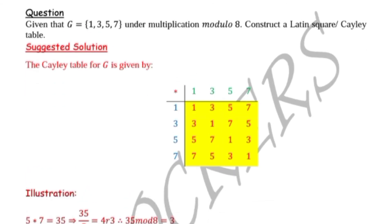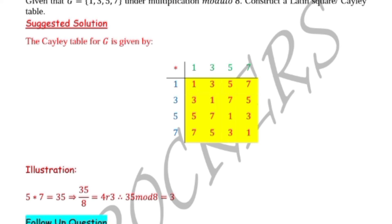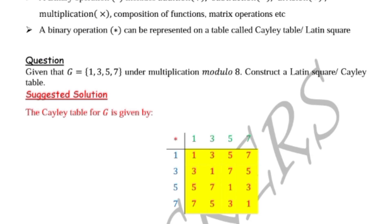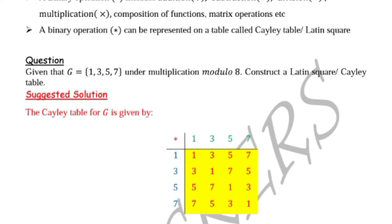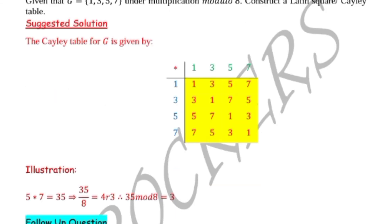The remainder 7 is what we write in the table. Now let's check 7 star 7, which gives us 1. Seven times 7 is 49. Then 49 divided by 8 gives 6 remainder 1, since 8 goes into 48 six times, then remainder 1 to give 49. That's how we get this 1.